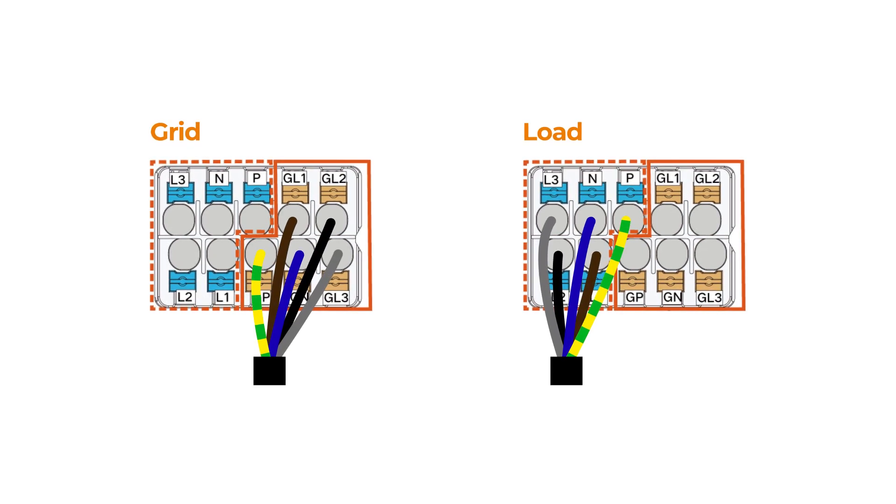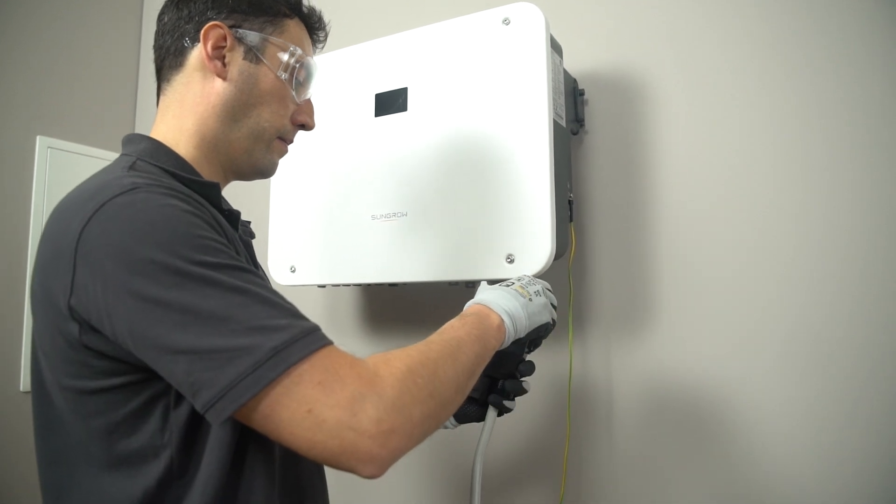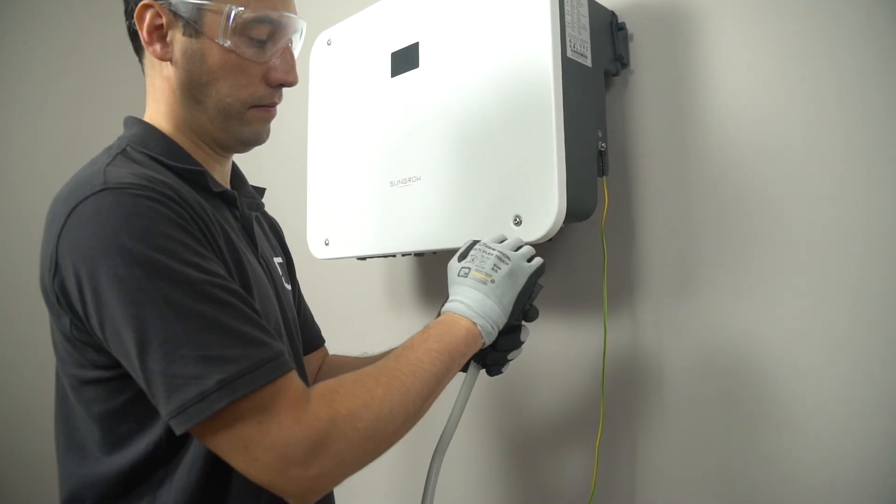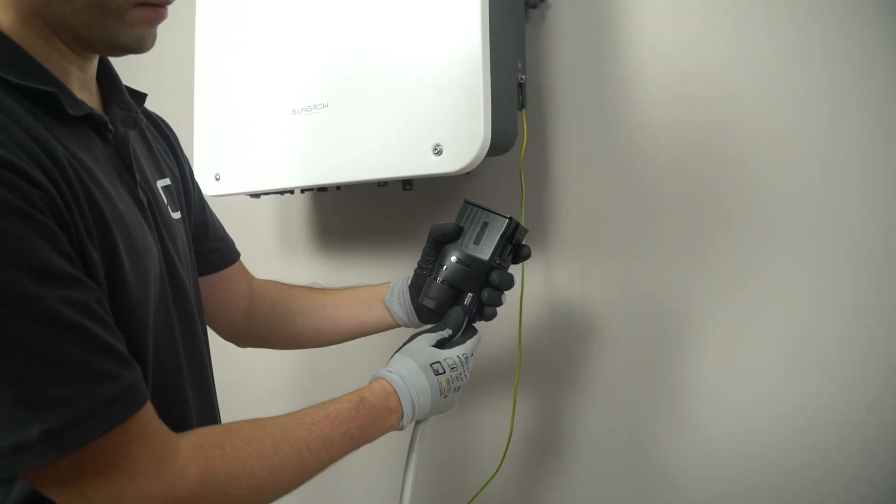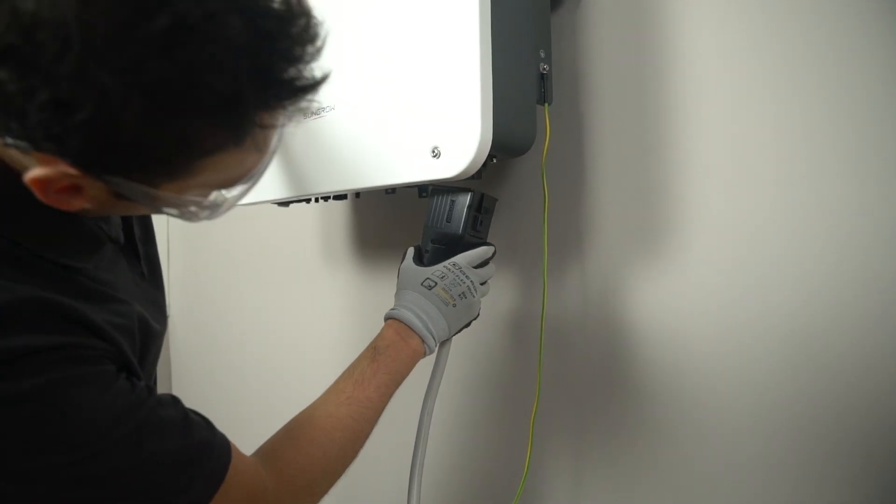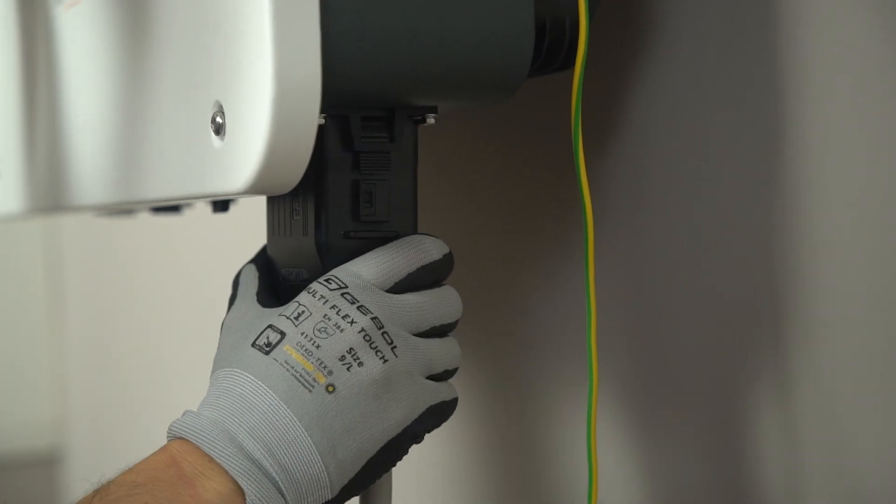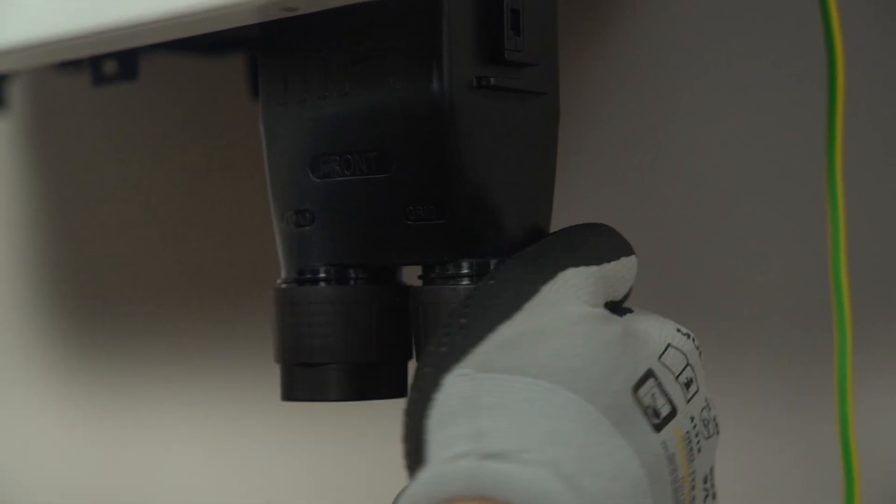After finishing wiring, make sure the cold pressed terminal does not protrude from the outside surface of the AC terminal. Ensure that the wires are securely placed by slightly pulling them. Insert the AC connector into the grid and load terminal on the inverter until you hear a click. Tighten the swivel nut to the housing. Lock the AC connector using a slotted screwdriver.